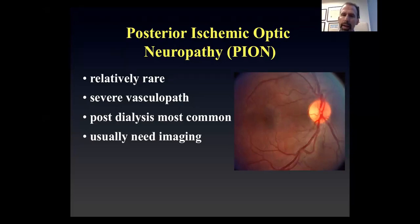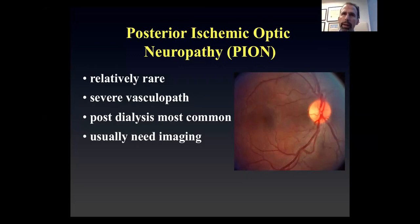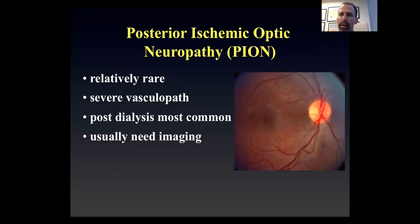A question was submitted about differentiating PION from functional visual loss acutely, and whether there will be a relative afferent pupillary defect. In non-organic vision loss, there will be no relative afferent pupillary defect. In posterior ischemic optic neuropathy, if it's unilateral or asymmetric, there will always be a relative afferent pupillary defect — just like any optic neuropathy that's unilateral or asymmetric.